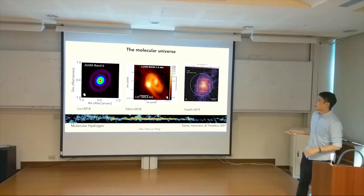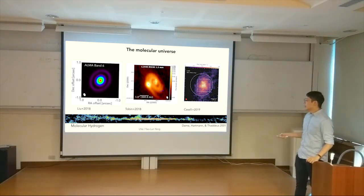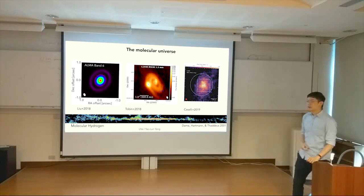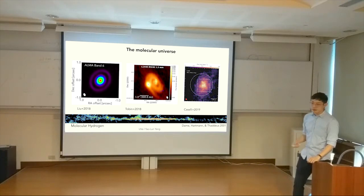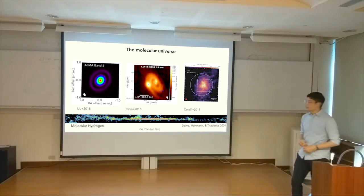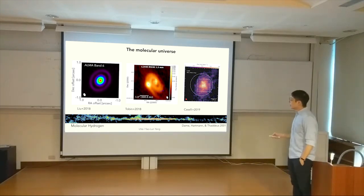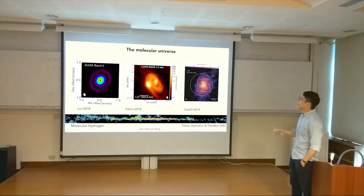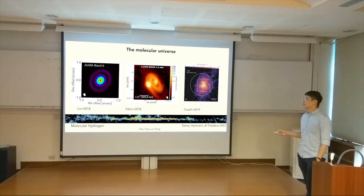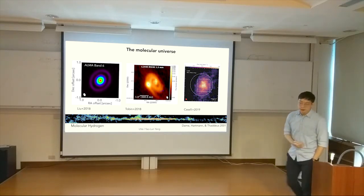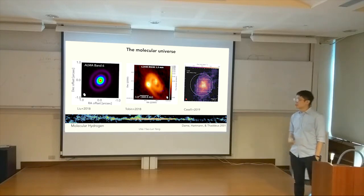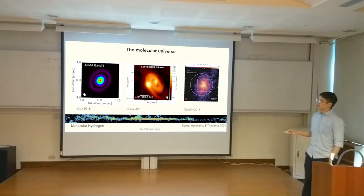We already know for a long time that our galaxy is full of molecular gas, and among that molecular gas there are many star formation regions - isolated and clusters, low mass and high mass. Here we take three typical sources at different stages. On the left there is a lot of structure - this was a very big discovery in recent years. Five years ago we didn't see this kind of structure in the more embedded sources.